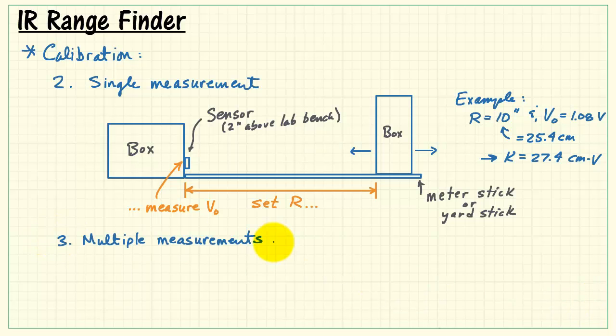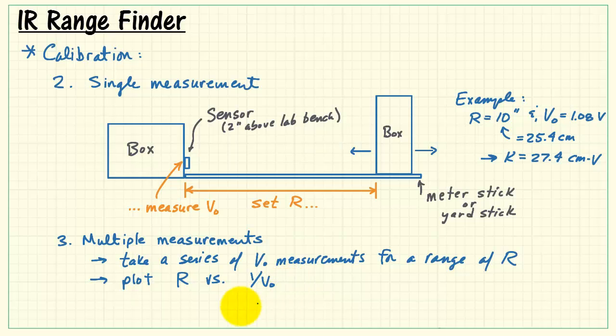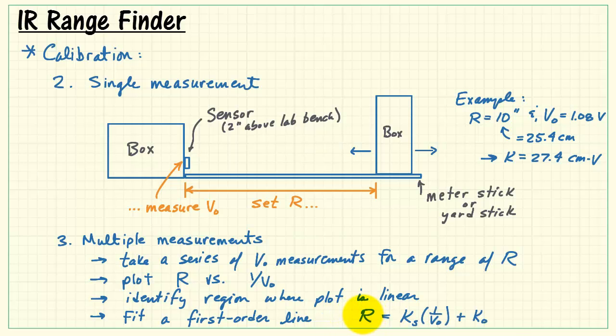The best technique involves making multiple measurements. In this case, you want to take a series of output voltage measurements for a range of R values. Plot the R values versus the reciprocal voltage, identify the region where the plot is linear, and then fit a first order line to that result. This first order line is based on our familiar k constant, which serves as a scaling factor. And then the first order line probably is going to have a non-zero offset as well, and that just adds to your accuracy of calibration.